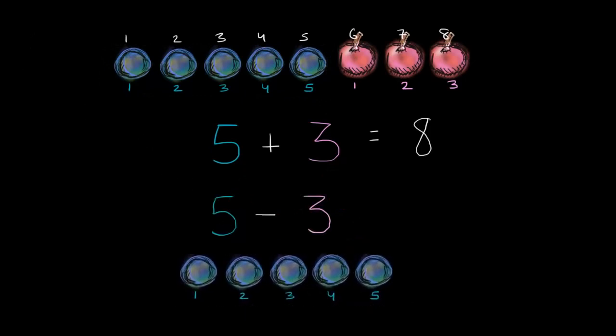And now if you're subtracting three, this means taking away three of your fruit. So take away one, take away two, and take away three. So how many are you left with? Well, you're just left with these. One, two, right over here. So five minus three is two.